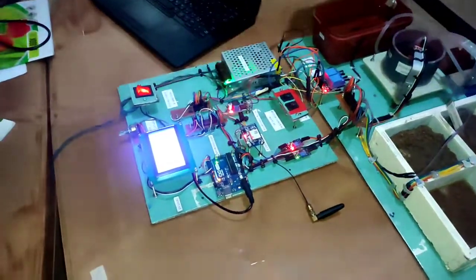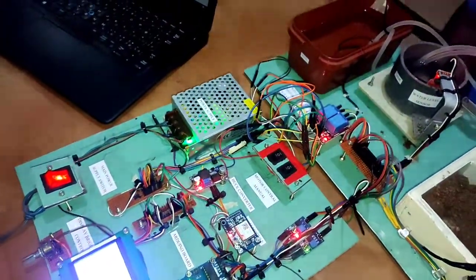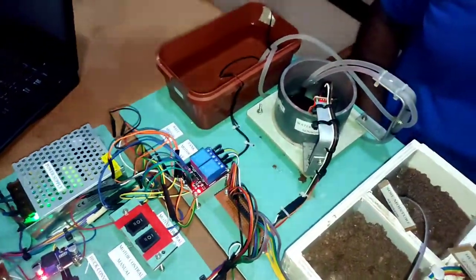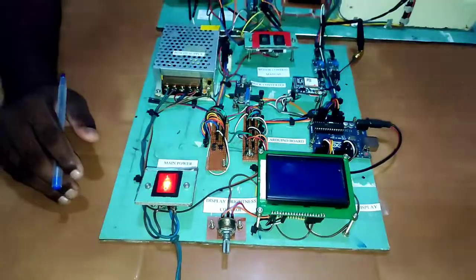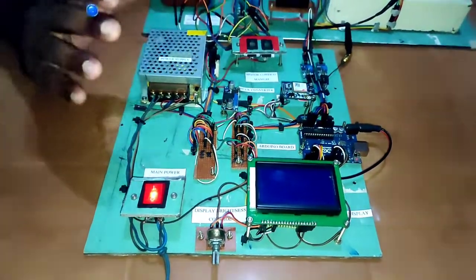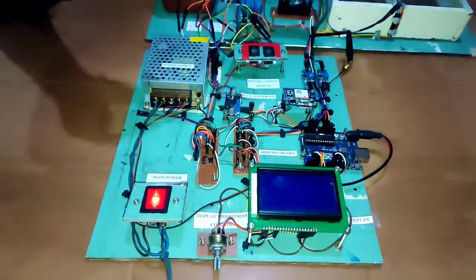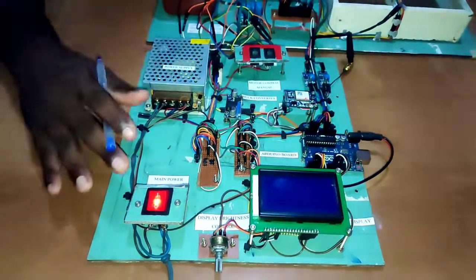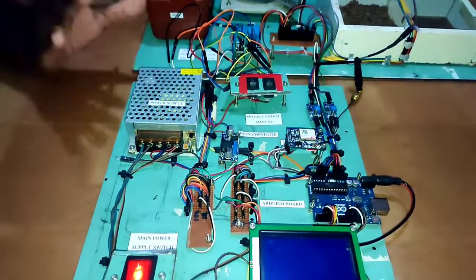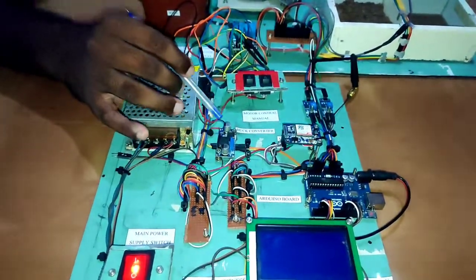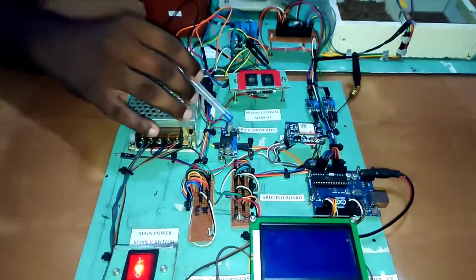This is our project structure. I will explain how we got the power supply for this project. Here we got 230V switch mode power supply to the main switch. Here we used 12V 5A switch mode power supply. Then we used LM2596 buck converter to convert 12V into 5V.